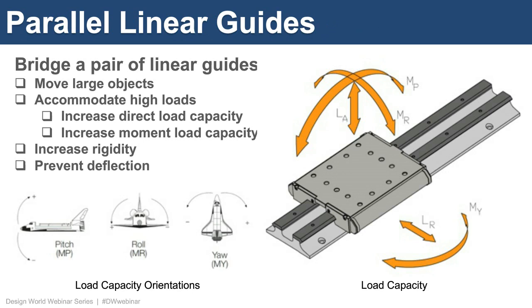Binding often occurs when you bridge a pair of linear guides. There are several reasons why you might want to use multiple linear guides in parallel: you may need to move larger objects, accommodate higher loads, increase the direct load capacity or moment load capacity, increase the rigidity of a machine or assembly, and you may need two linear guides in parallel to prevent deflection.